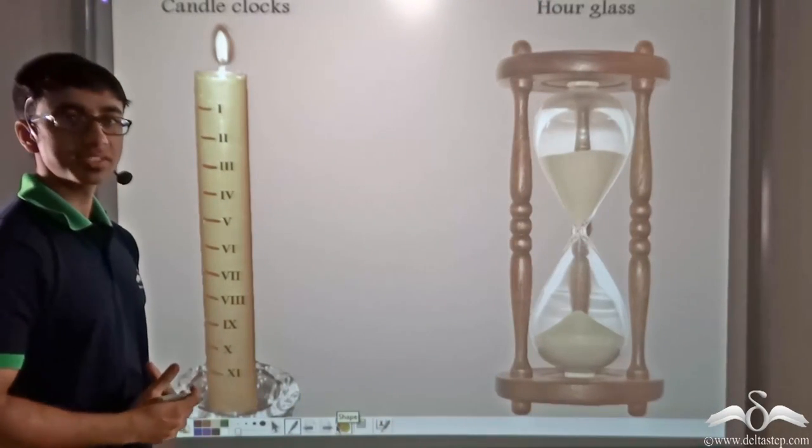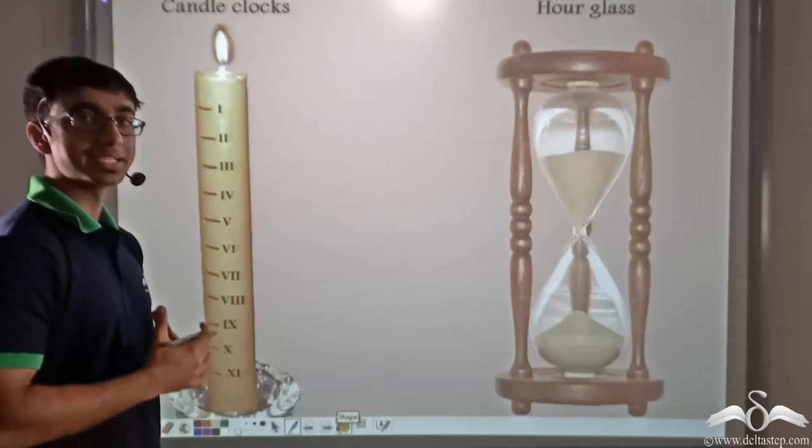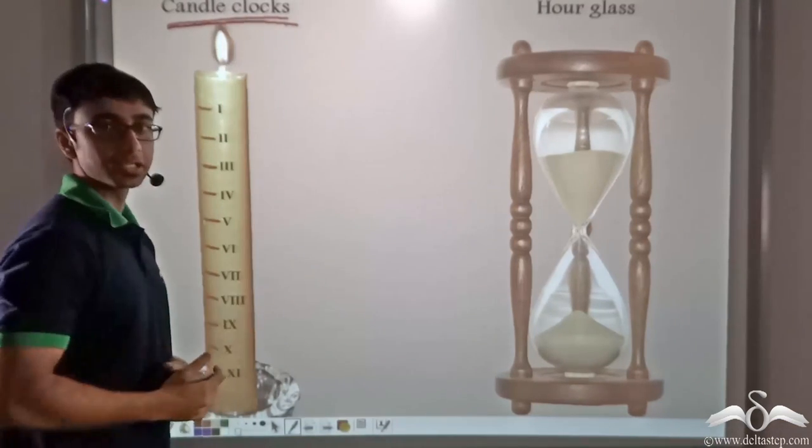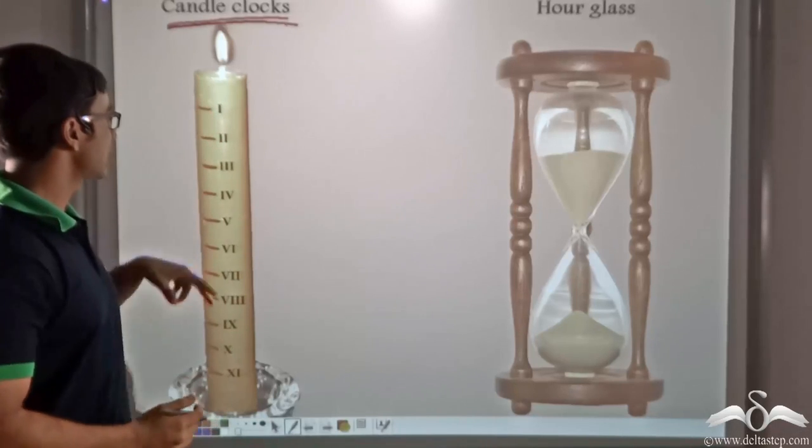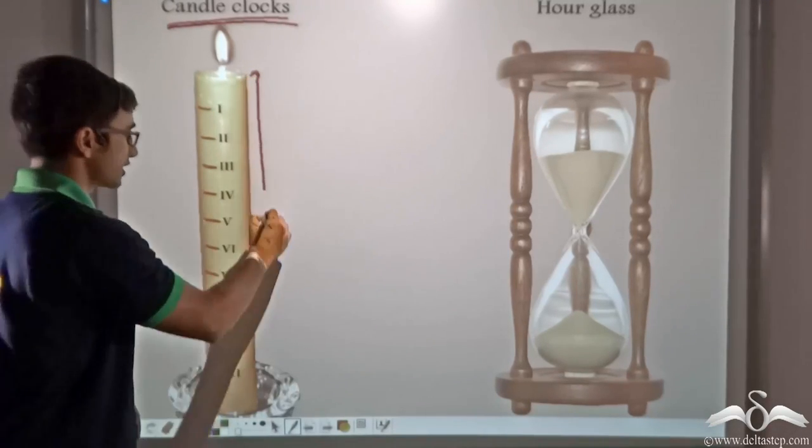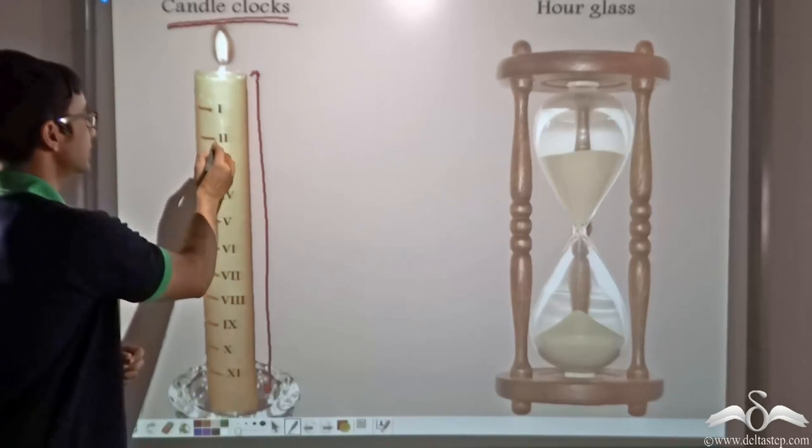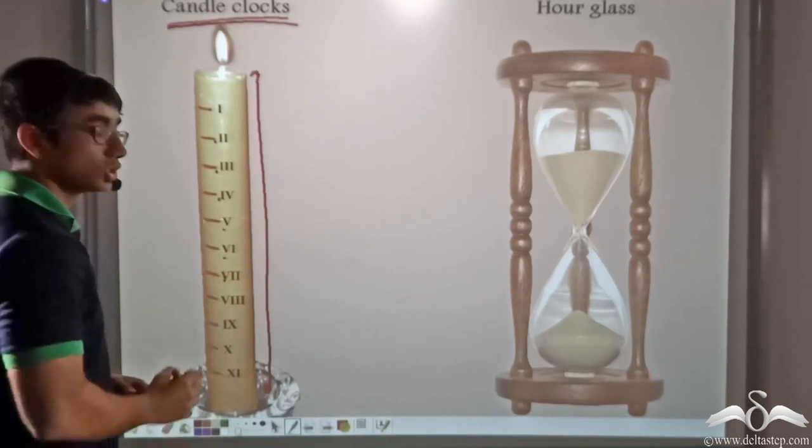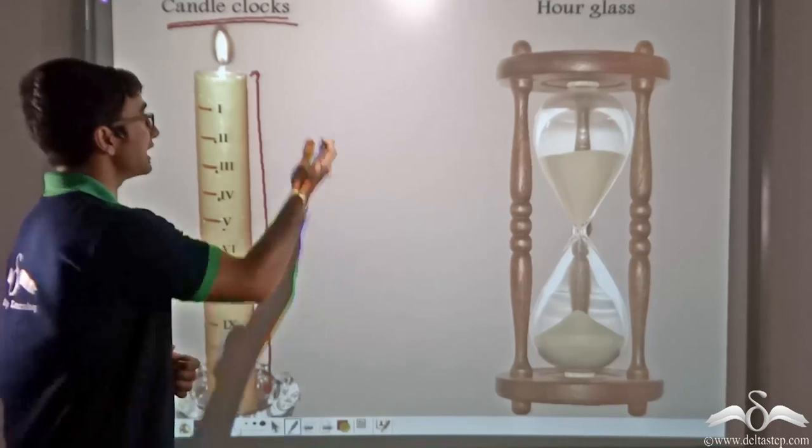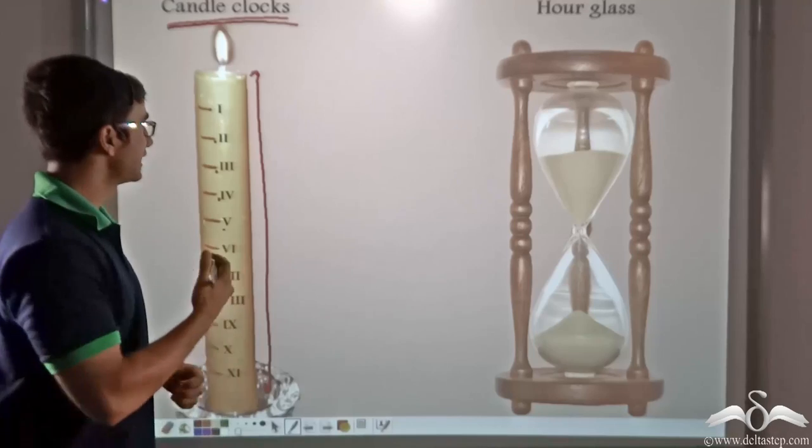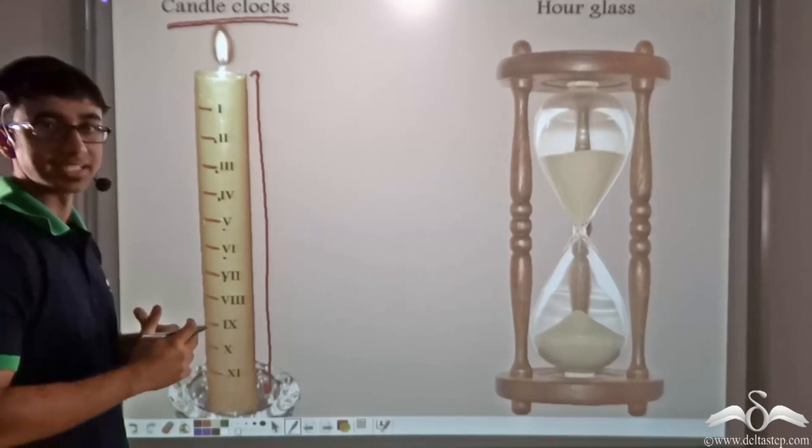There were many other instruments that were used for measuring and calculating time. One of the instruments used was a candle clock. A candle clock was constructed of a fixed length and it had certain markings on its size. In this manner people in ancient China, where candle clocks were most popular, said what time of the day it is.